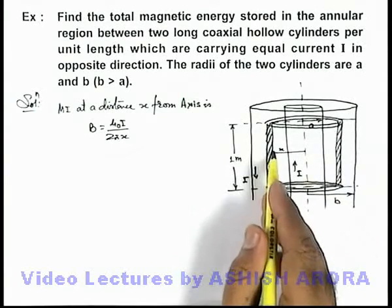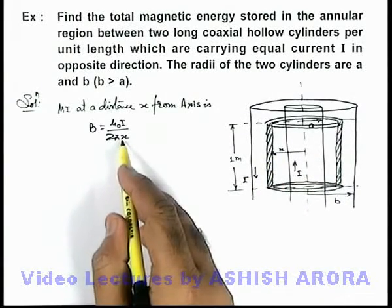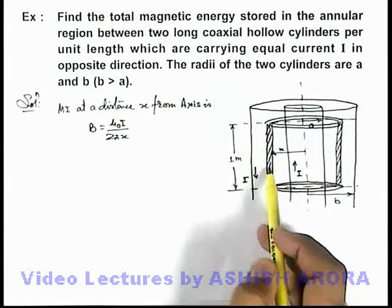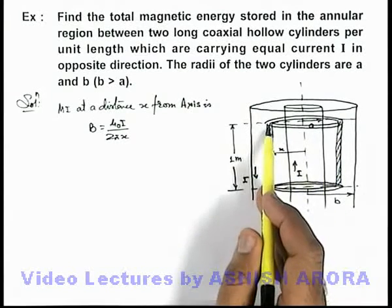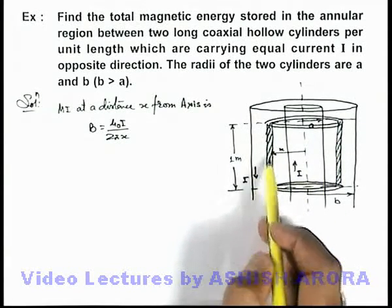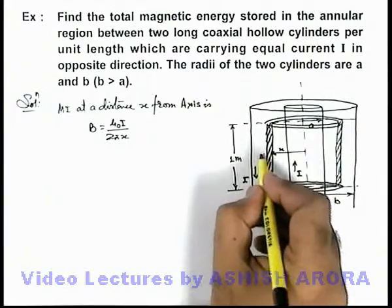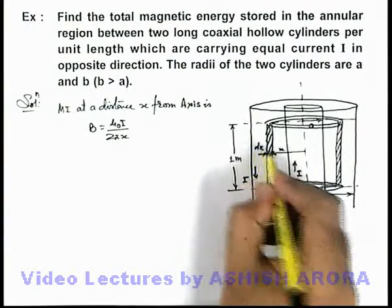And as the magnetic induction varies with x, we can assume that in this cylindrical shell, the value of magnetic induction can be considered to be a constant as this width of shell dx is very small.